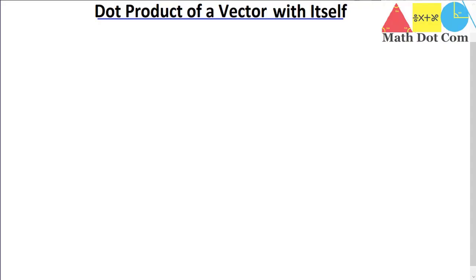Hello everyone. Today we are going to learn how you can find the dot product of a vector with itself. It means you have only one vector and you have to find its dot product with itself.